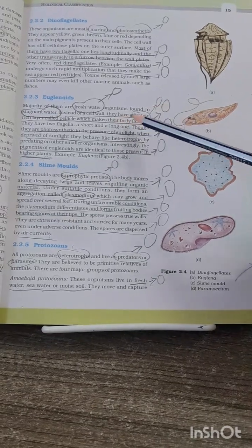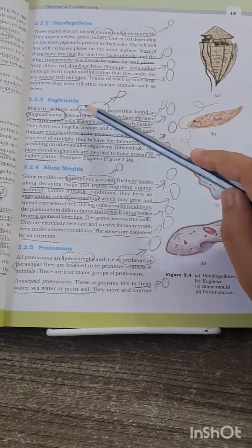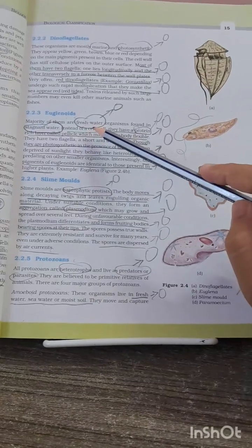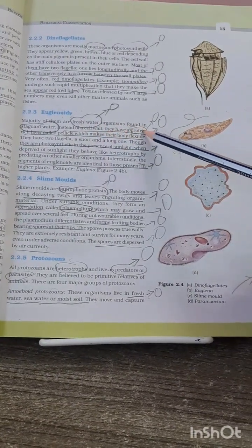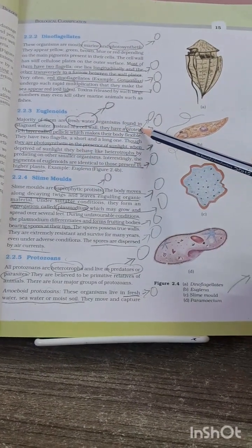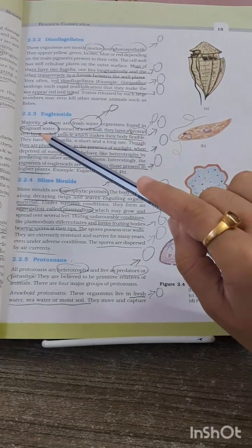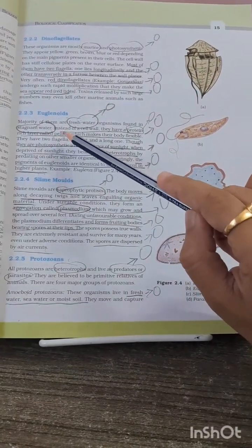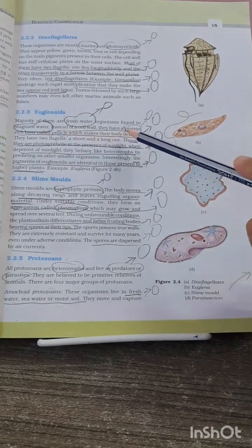Now one more important MCQ which has been asked many times is about the cell wall of the euglenoids. That is, euglenoids instead of a cell wall do not have a cell wall, but they have a protein-rich layer called pellicle, which makes their body flexible.